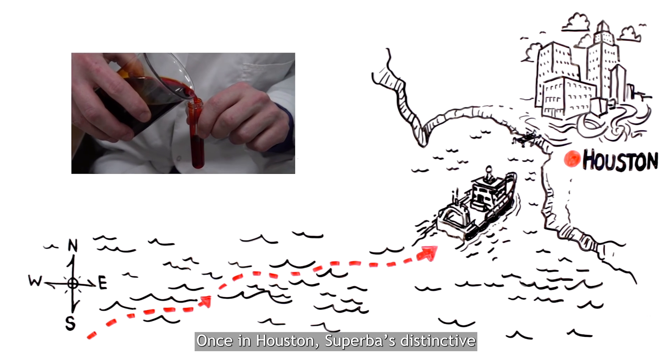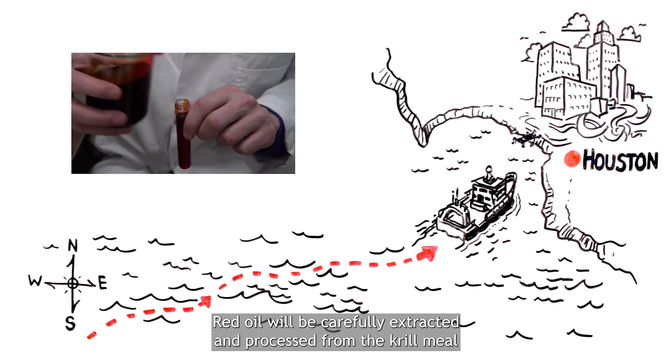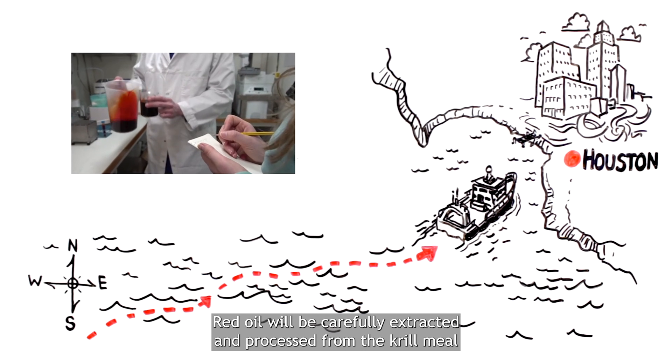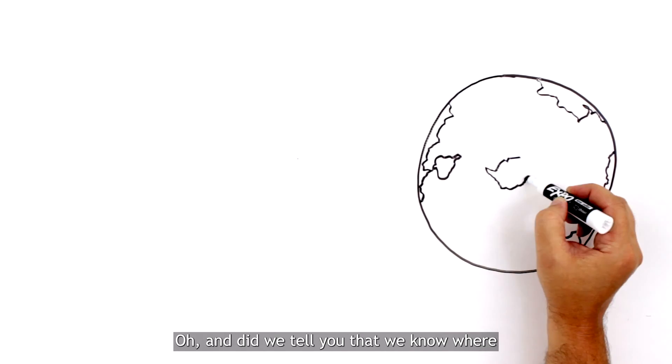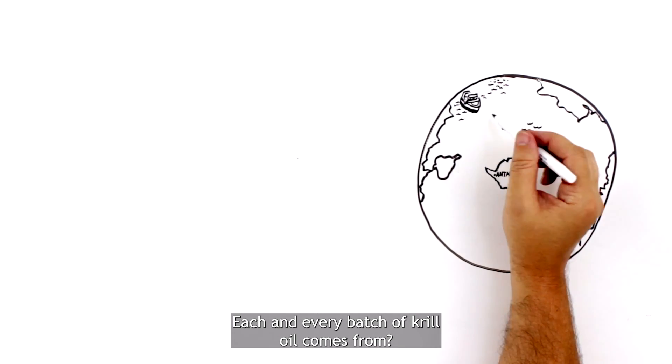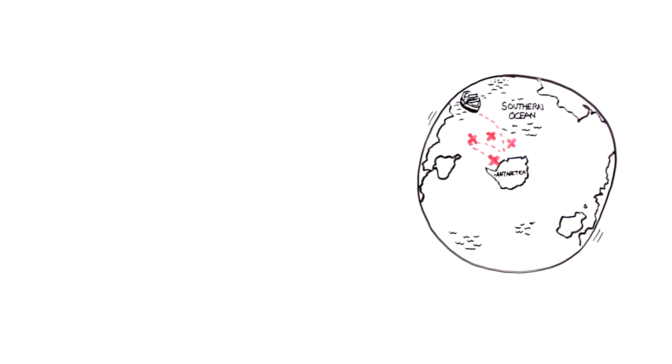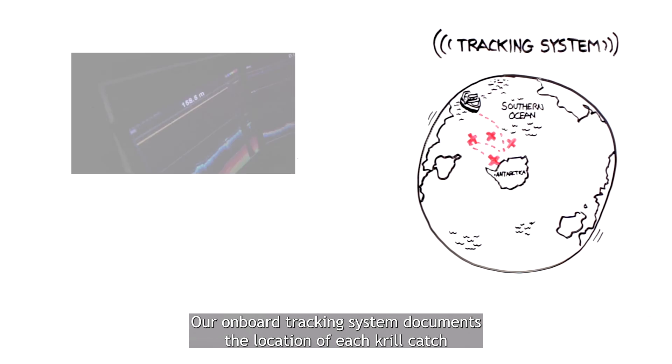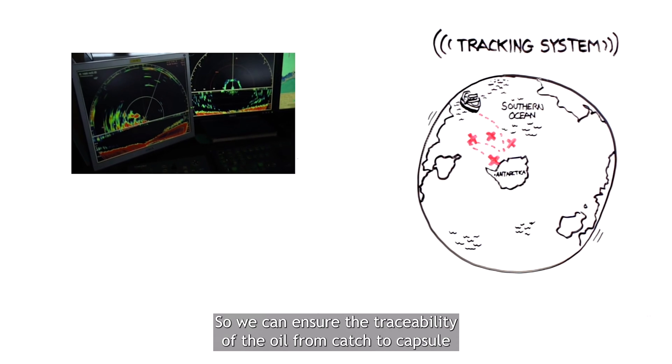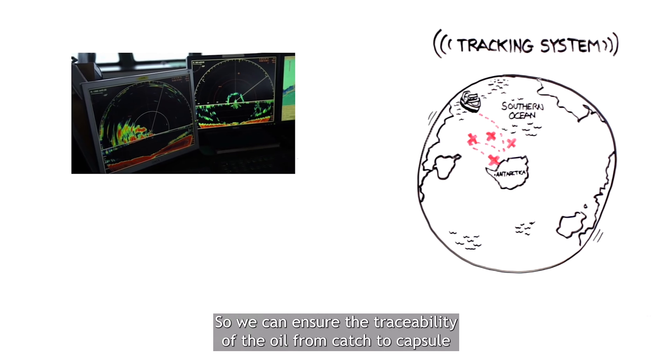Once in Houston, Superba's distinctive red oil will be carefully extracted and processed from the Krill Meal. And did we tell you that we know where each and every batch of Krill Oil comes from? Our onboard tracking system documents the location of each krill catch so we can ensure the traceability of the oil from catch to capsule.